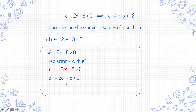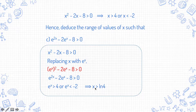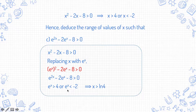You can therefore replace x with eˣ in the solution. eˣ > 4 implies that x > ln 4. And there is no solution for eˣ < -2 because eˣ is positive for all real values of x.